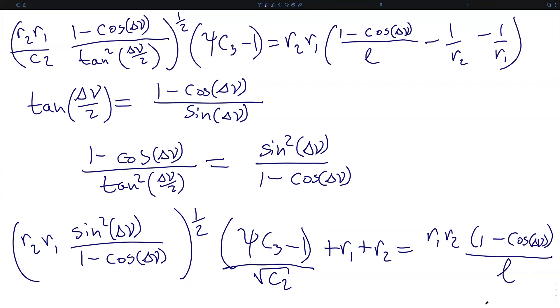Plus r1 plus r2 is equal to r1 r2 times 1 minus cosine delta nu over l. To make things a little bit clearer, we're going to define this entire term as A, and we're going to define this right-hand side term as y.